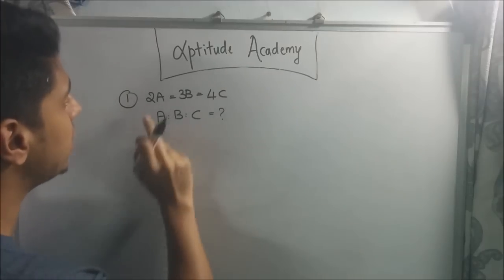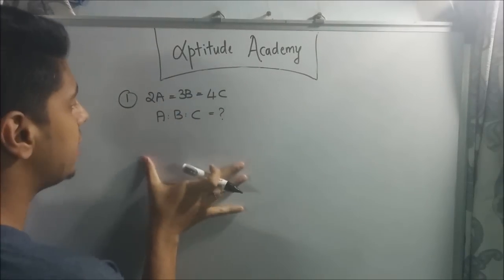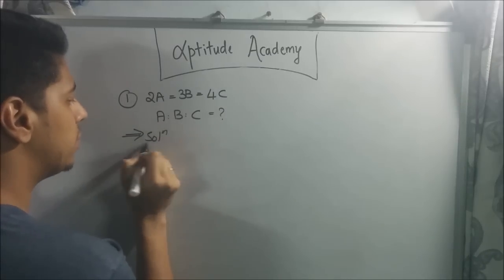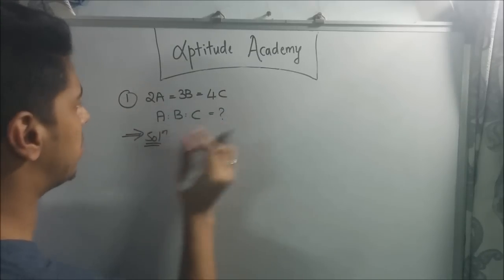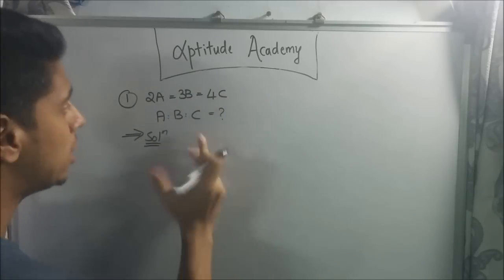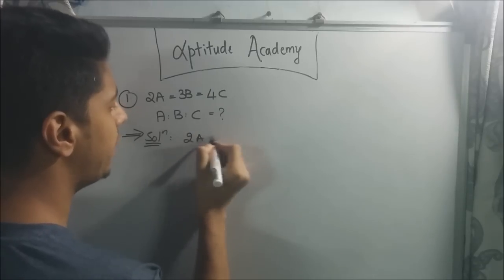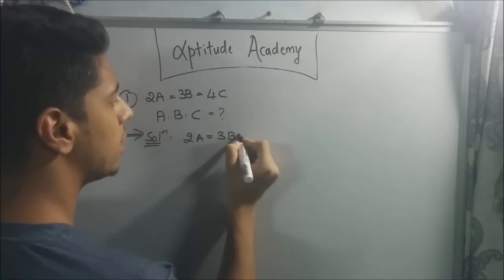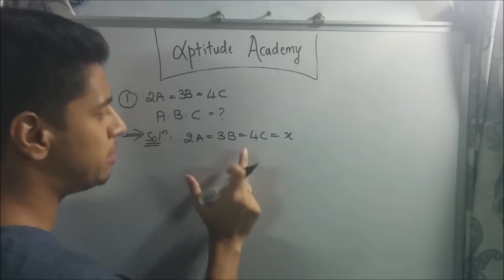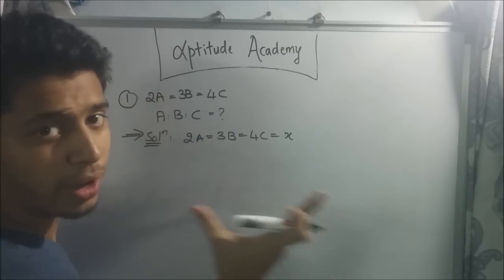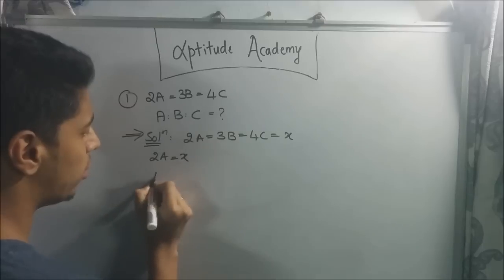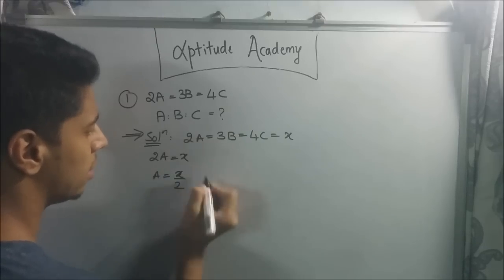Now for the first sum they've given 2a equals 3b equals 4c, and they've asked what is a:b:c? When you get this type of problem, you equate this to some number. Since 2a equals 3b equals 4c, but they've not said it's equal to what, you can just keep it as x. So we'll keep 2a equals 3b equals 4c equals x. Now we'll find what is a, what is b, what is c, and take the ratio. By this you can say 2a equals x, so a equals x by 2.